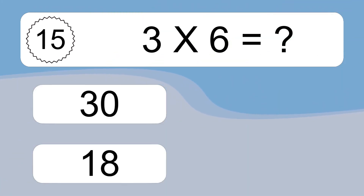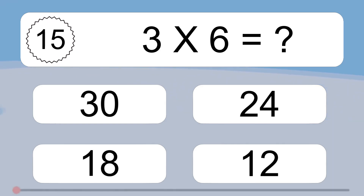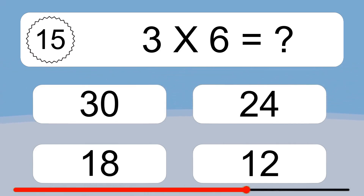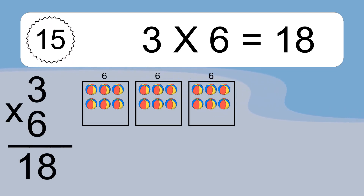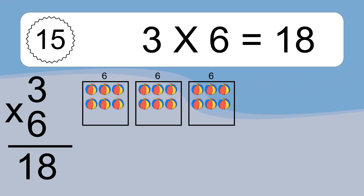3 times 6 equals what? 3 times 6 equals 18. We have 3 boxes and each box has 6 colorful balls inside. If you count all the balls in all the boxes together, you will have 3 times 6 balls. This equals 18 balls.